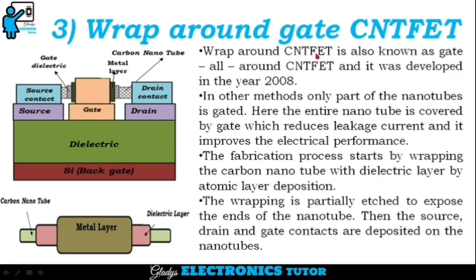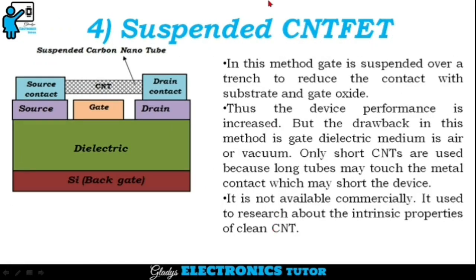Next is wrap around gate CNTFET, also known as gate-all-around CNTFET. It was developed in the year 2008. In other methods, only part of the nanotube is gated, but here the entire nanotube is covered by the gate, which reduces leakage current and improves electrical performance. The fabrication process starts by wrapping the carbon nanotube with a dielectric layer by atomic layer deposition. The wrapping is partially etched to expose the ends of the nanotube, then the source, drain, and gate contacts are deposited on the nanotubes.